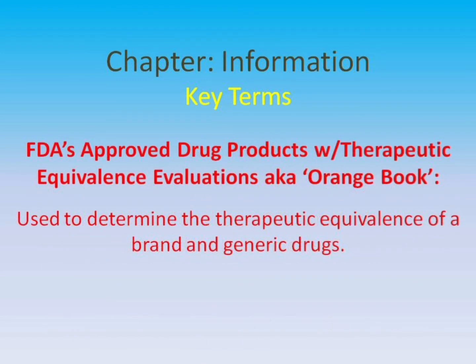FDA's Approved Drug Products with Therapeutic Equivalents, also known as the Orange Book, is used to determine the therapeutic equivalents of brand and generic drugs.